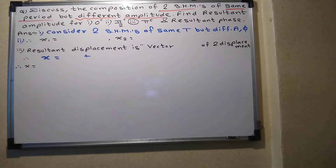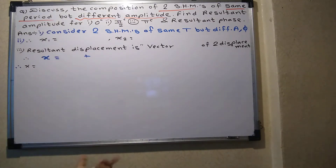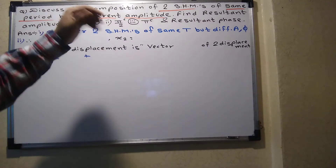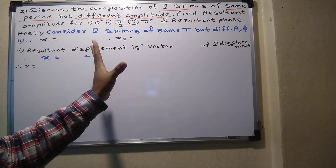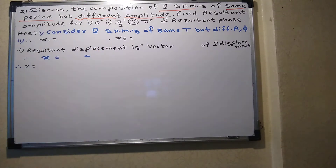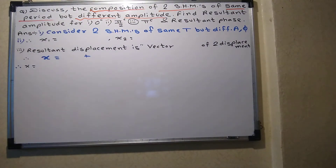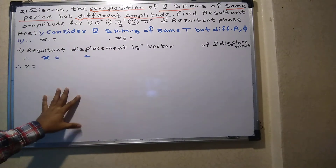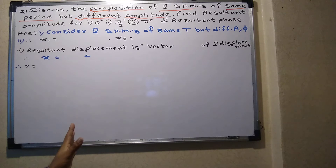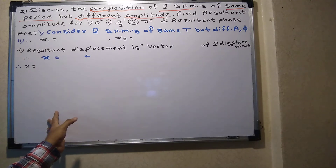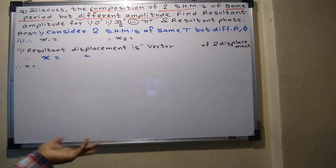Students are asking: can you give the derivation on the board so we get a clearer idea? So all of you concentrate — I will explain on the board. Remember this question as the composition of two SHMs. The total mathematics involves some trigonometric ratios which you have to understand.